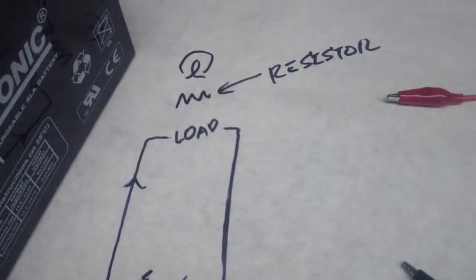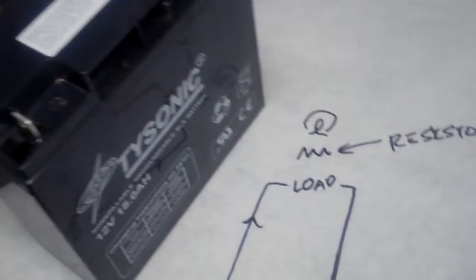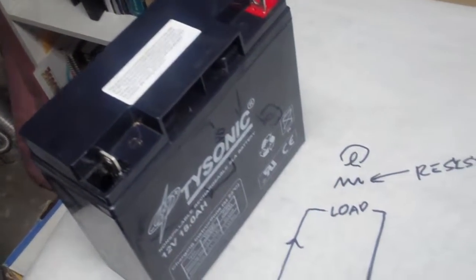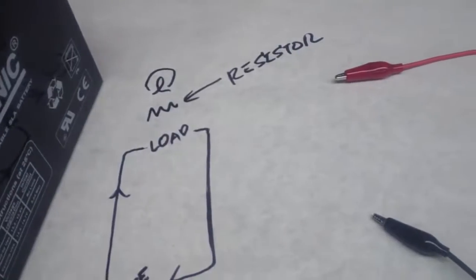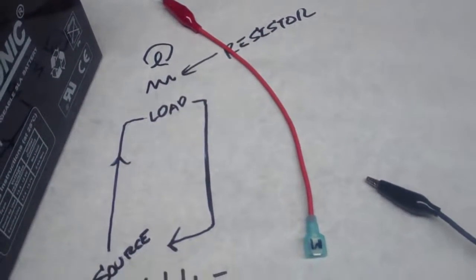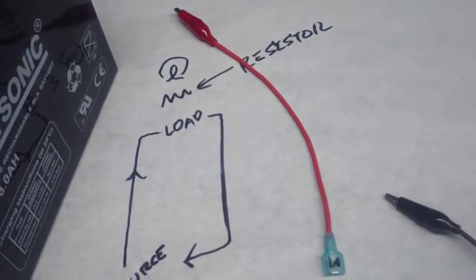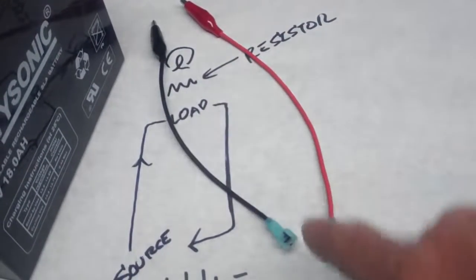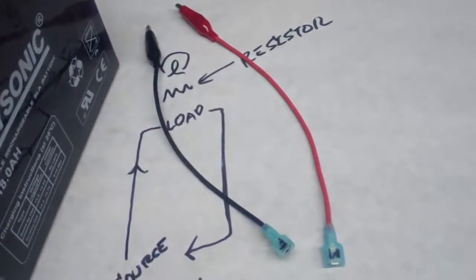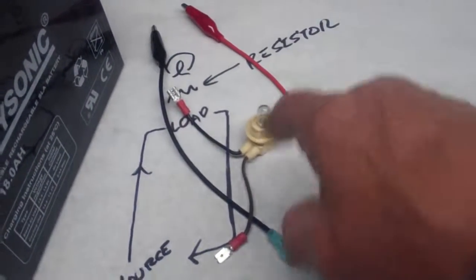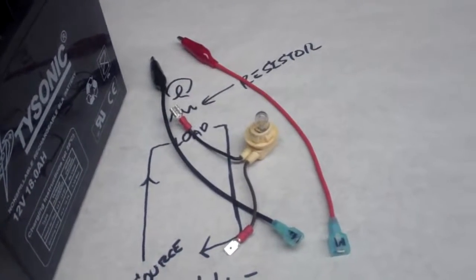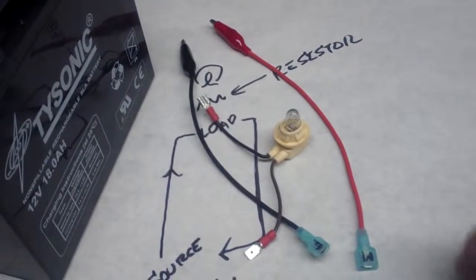For the circuit that we're going to build here we've got a battery which is our source. It's a 12 volt 18 amp hour battery. I've got a current path from the battery to my load. I've got a current path from my load back to the battery and I got a load which is just simply this light bulb. So here we go let's build a simple circuit.